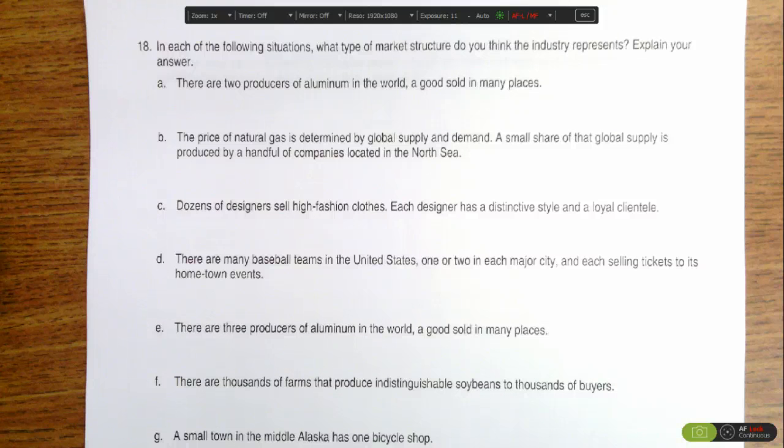That would indicate to us, because there are only two producers, it's more than one, so it's not monopoly. But there's clearly market control and there aren't many producers when there's only two producers in the market. So that would eliminate perfect competition. And so what we're looking at here is oligopoly.